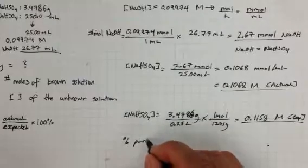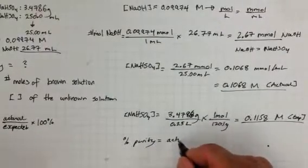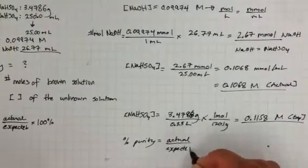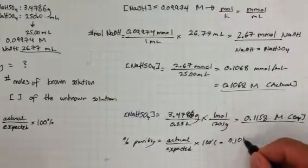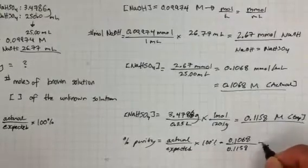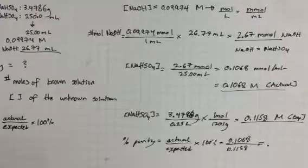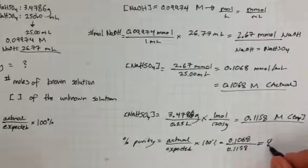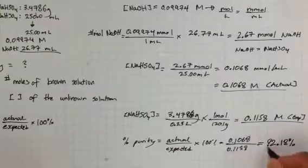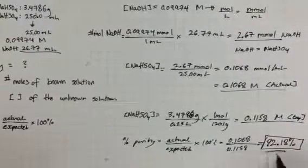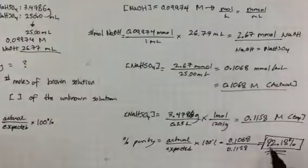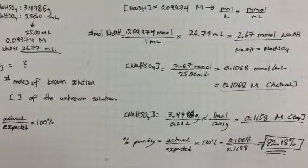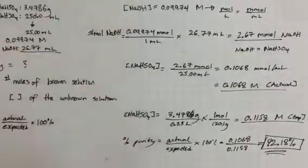To determine the percent purity, we use the formula: actual divided by expected, times 100%. That's 0.1068 divided by 0.1158, times 100%, which gives approximately 92.18% pure. That's the final answer — the purity of the sodium hydrosulfate from this titration is 92.18%.